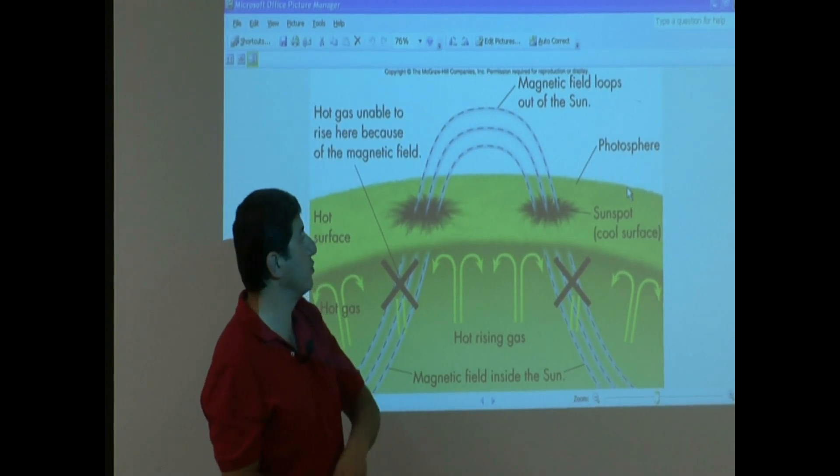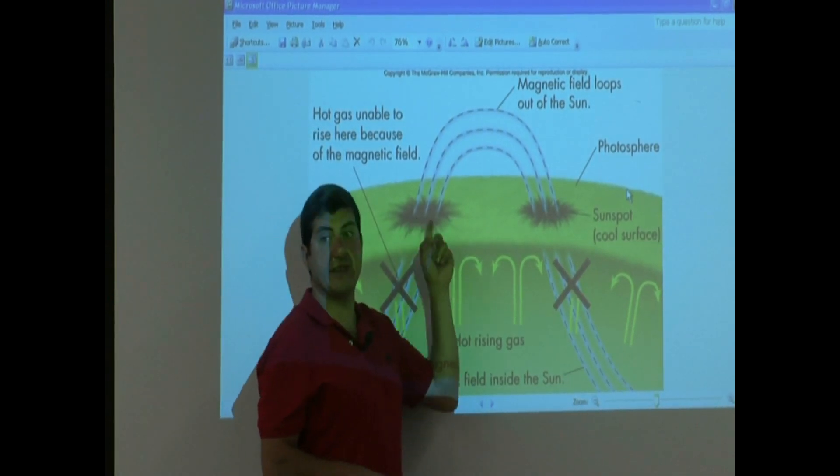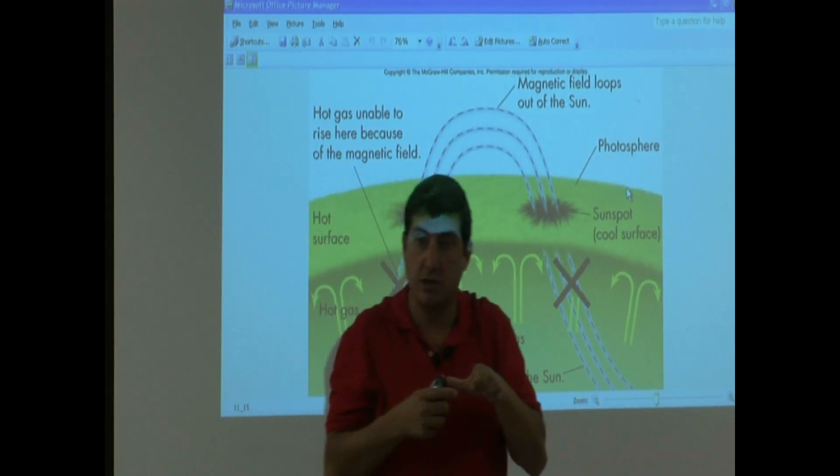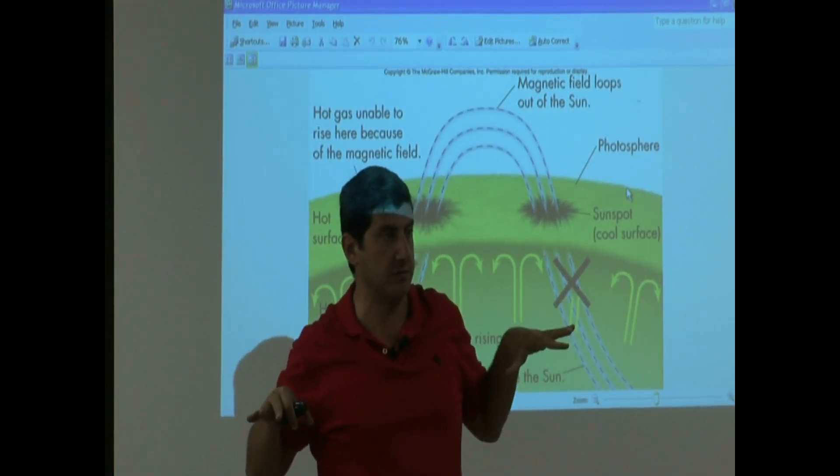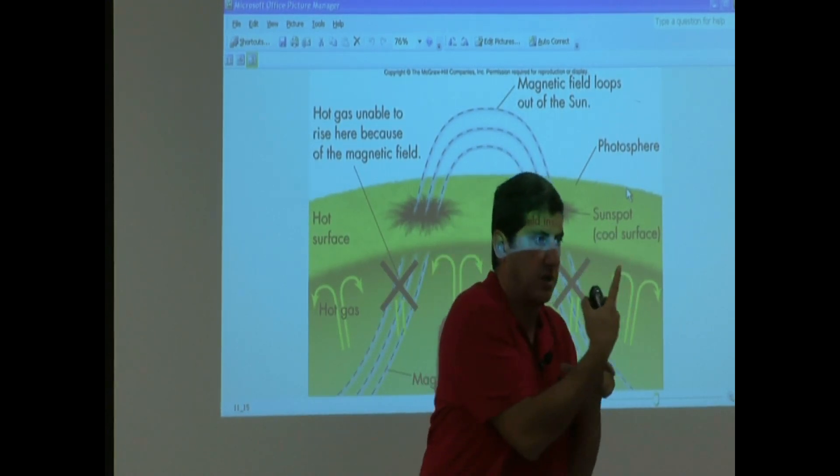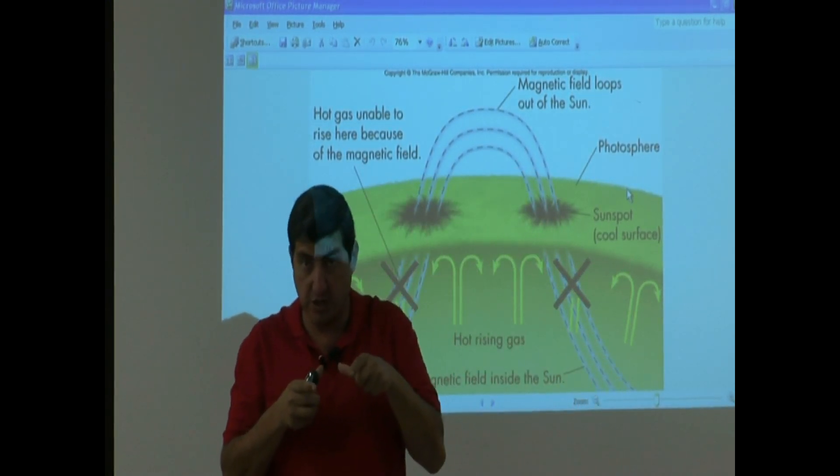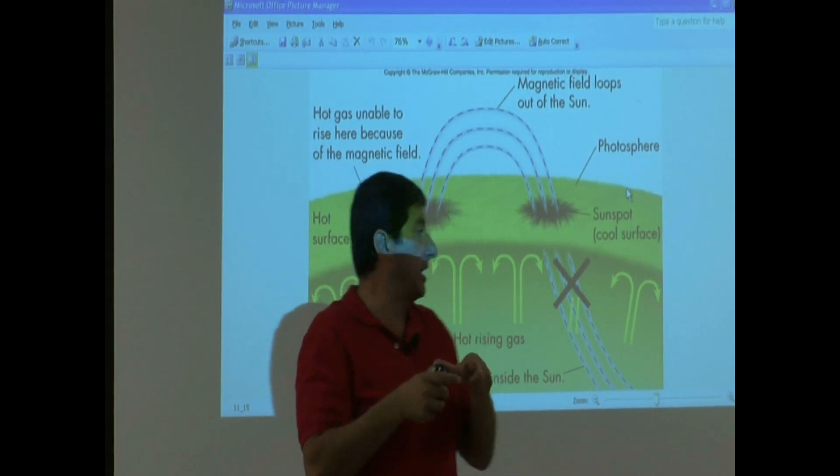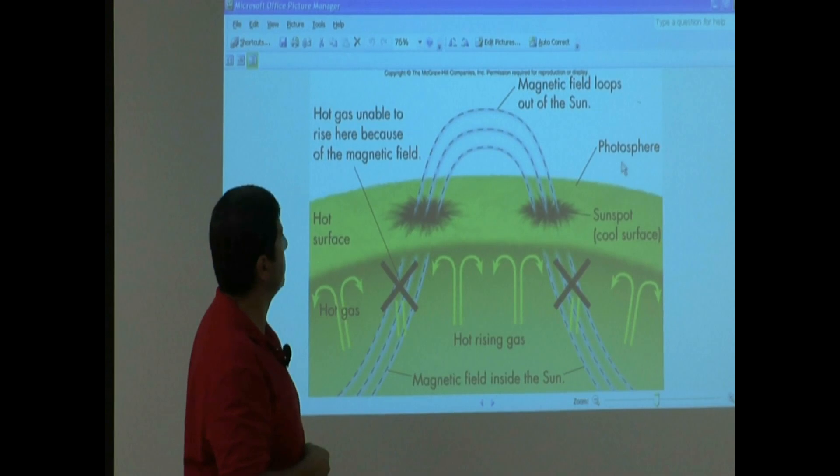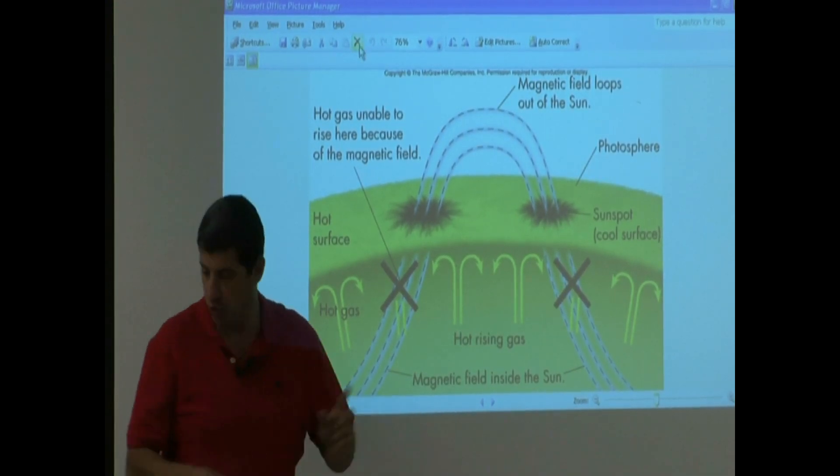The other thing we should expect, the magnetic field inside the sunspot should be stronger than the magnetic field outside. Why? Because that's where the magnetic field is coming out. So the field there should be stronger, it should be cooler, and it should be darker in comparison to the surrounding.